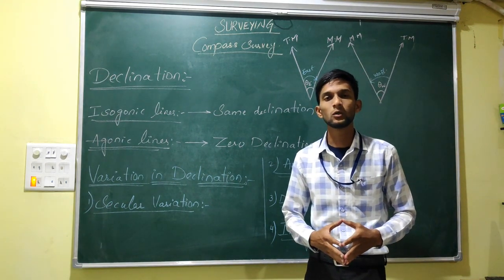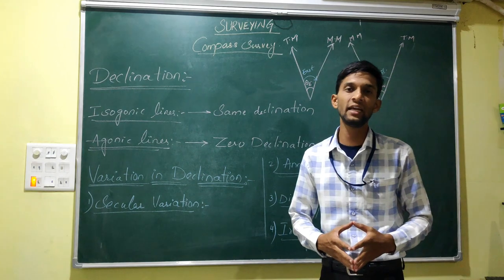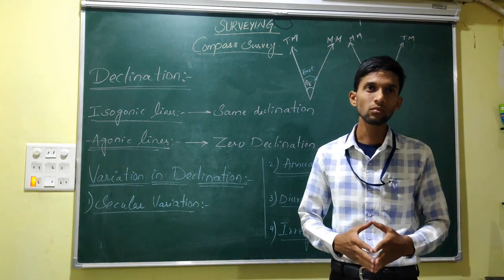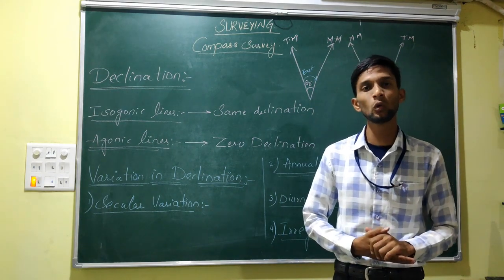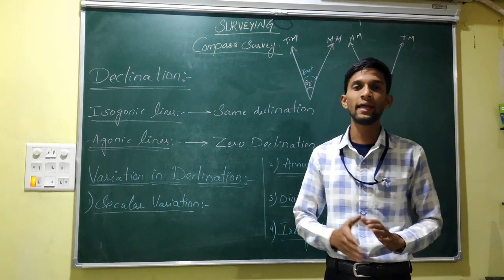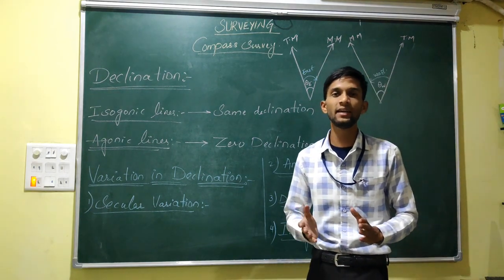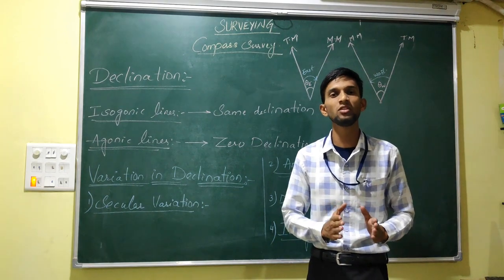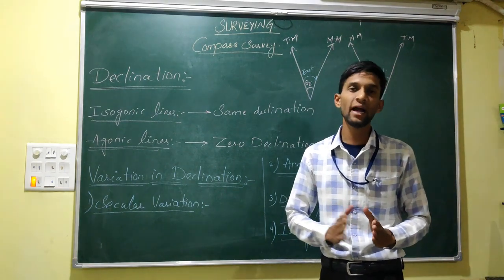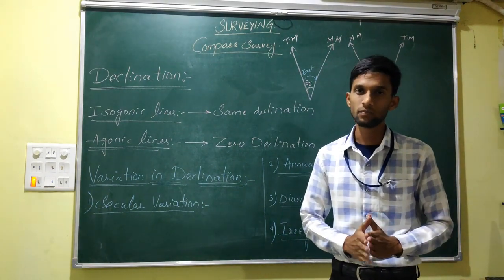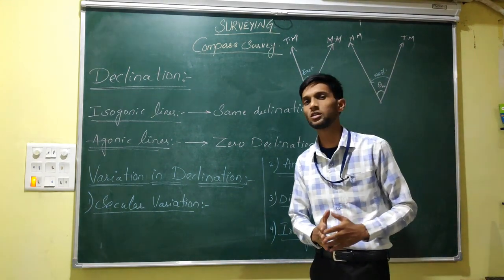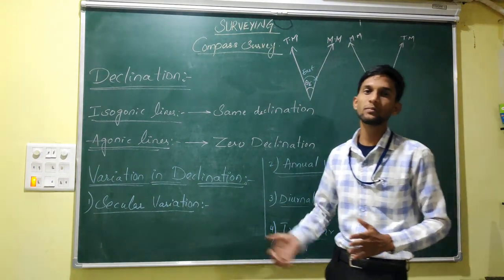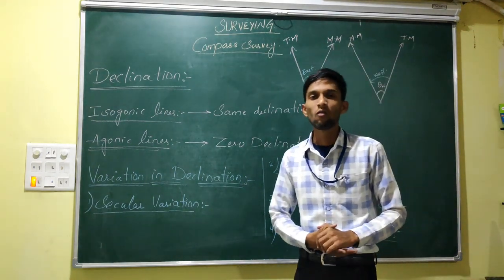The true meridian is with reference to a true north. And the magnetic meridian is with reference to a magnetic north. So let's go to our topic.